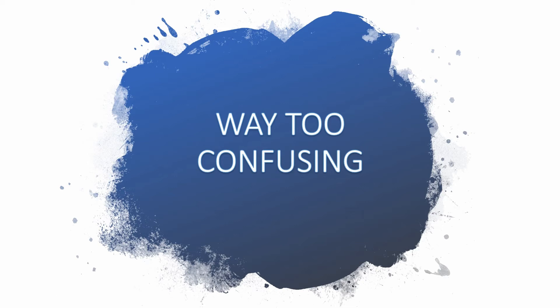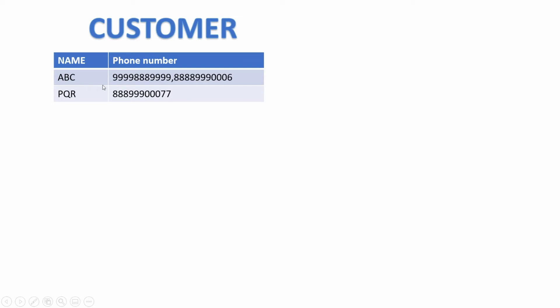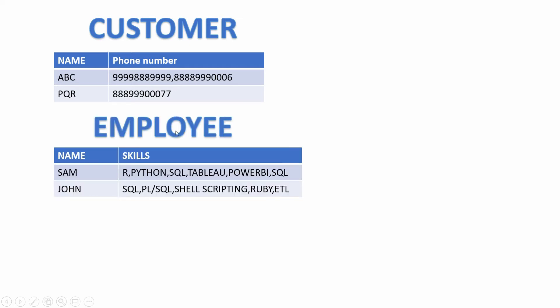For now, just remember that first normal form deals with atomicity, and the most important keyword is multi-value attribute. If someone asks you about first normal form, no multi-value attribute should come in the first sentence of your explanation. Let's understand this with an example. We have a customer table where a customer is allowed to maintain multiple phone numbers.